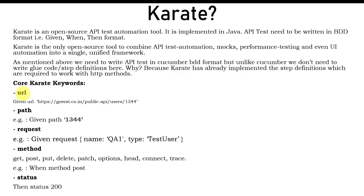The first core keyword is URL. This is used when you are making an HTTP request — it defines which URL you want to hit. You write it using 'Given URL'. You don't need an assignment operator because URL sets the value once, and the next time you use it, it will set whatever new value you pass in.